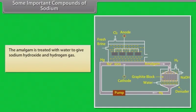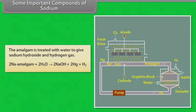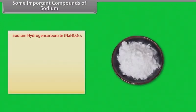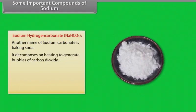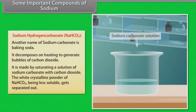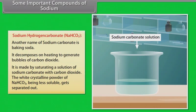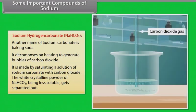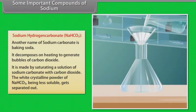The amalgam is treated with water to give sodium hydroxide and hydrogen gas. Sodium hydrogen carbonate, also known as baking soda, decomposes on heating to generate bubbles of carbon dioxide. It is made by saturating a solution of sodium carbonate with carbon dioxide. The white crystalline powder of NaHCO₃, being less soluble, gets separated out.